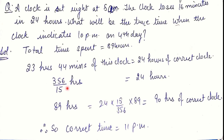So 356/15 hours of this slow clock equals 24 hours of a correct clock. The clock has spent 89 hours; applying the unitary method: correct time = 89 × (24 × 15 / 356) = 90 hours. So if this clock has spent 89 hours, the correct clock has spent 90 hours. Since we started at 5 AM and 90 hours later is 11 PM, the true time when the clock shows 10 PM on the fourth day is 11 PM.